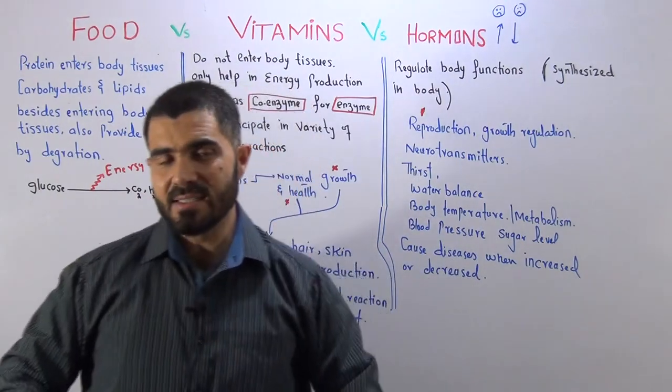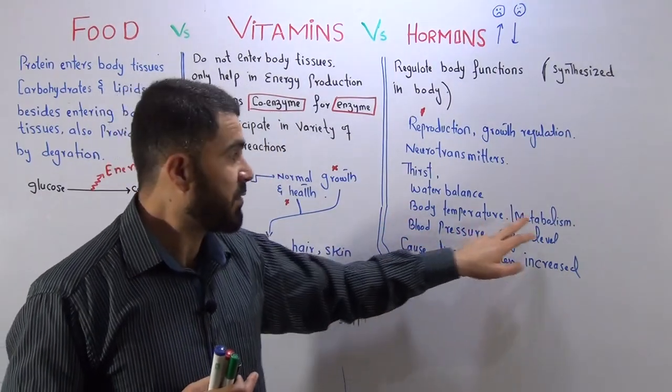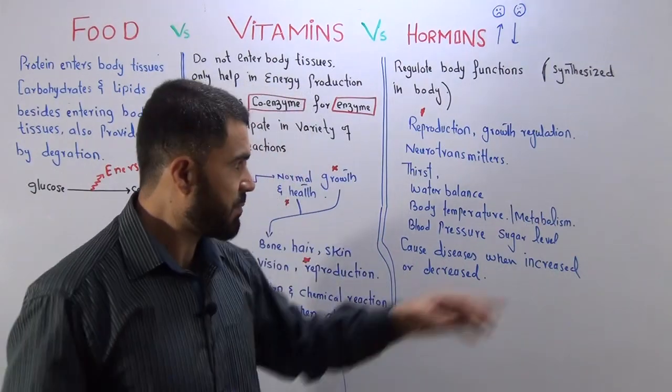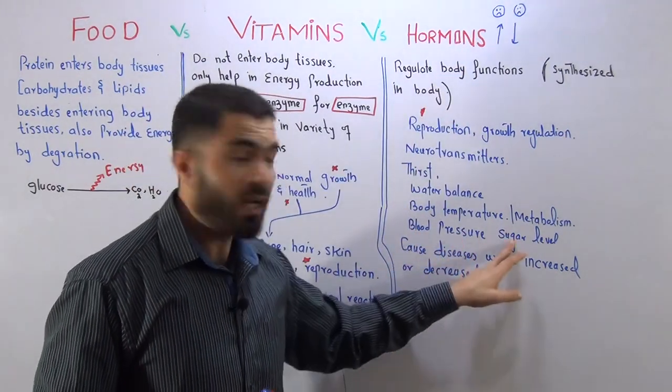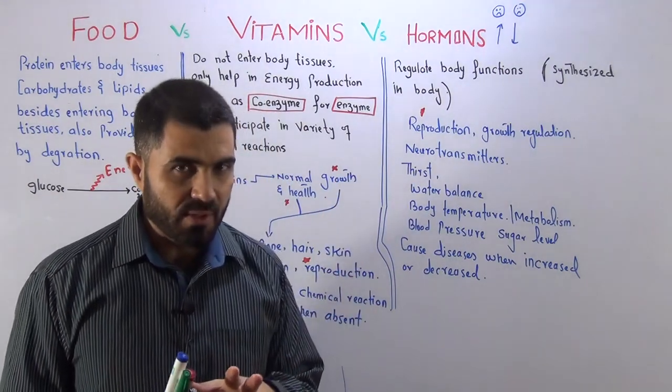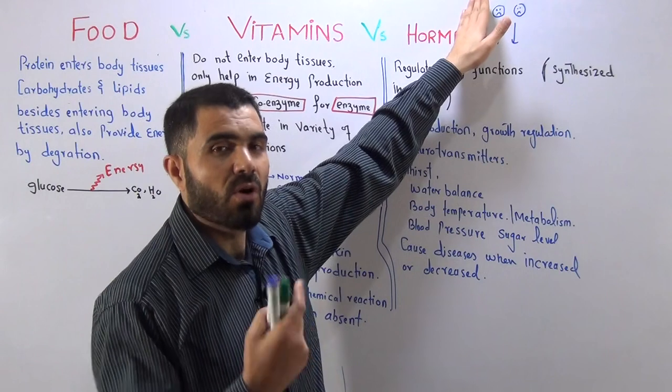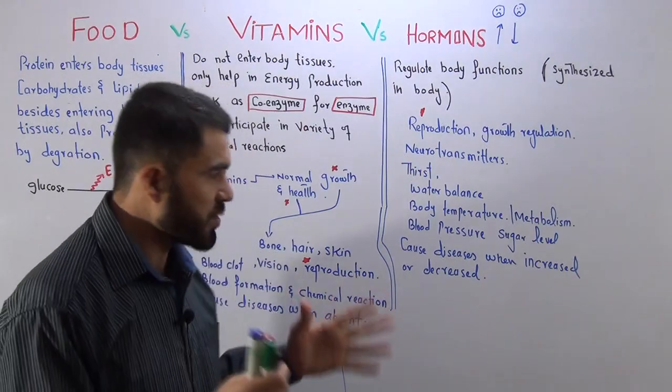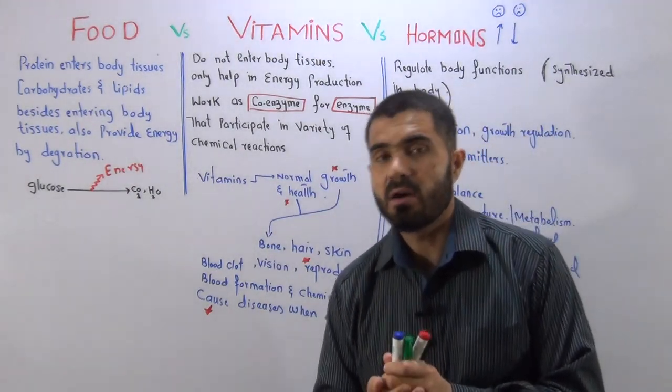The water level will be decreased. If the water level is decreased, then because of the hormone, water level will be increased. So water balance, body temperature, even body temperature, even metabolism. Metabolism is the breaking and making of compounds in your body. So metabolism is also under the strict regulation of hormones. Besides this, blood pressure, sugar level, just like insulin sugar, insulin. Just like what I mean, cause disease when absent. Similarly, hormone also cause disease when hormone is increased, it will cause problem, disease. Or if hormone is decreased, it will also cause problem and disease, different disease. So this was a comparative study between food, vitamins, and hormone. That was the basic lecture on the comparison.